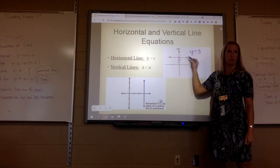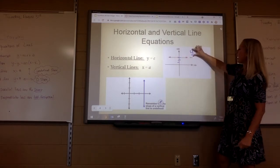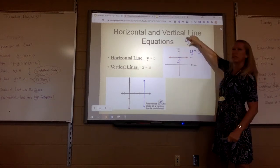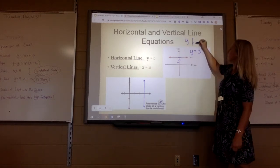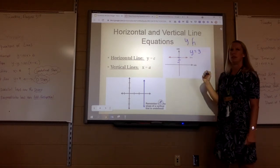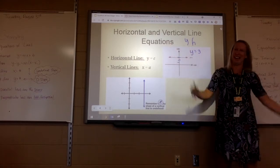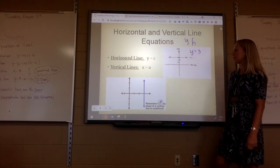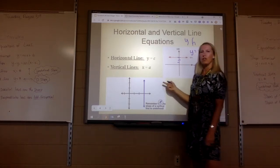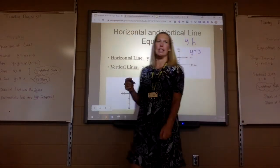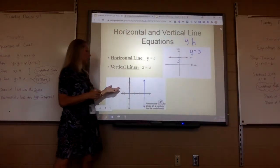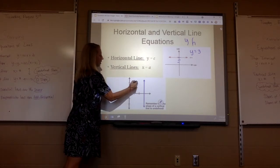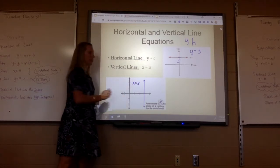A horizontal line — if you take a y and turn it upside down, it resembles the letter H, like horizontal. Y equals. A vertical line is always x equals the number. So if it crosses at 3, this would be x equals 3.